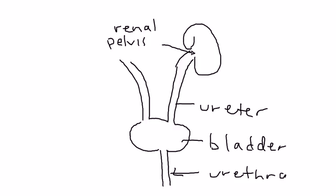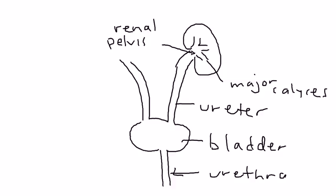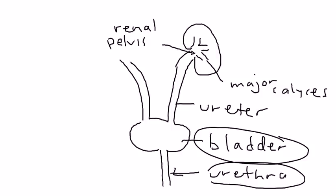The renal pelvis branches out into three, and those three are called major calyces. Just in case you're wondering how it's different from a urinary tract infection or cystitis: urinary tract infections usually involve the urethra, cystitis involves the bladder, but pyelonephritis involves the renal pelvis and the kidney. Pyelonephritis is much more common in females rather than men.